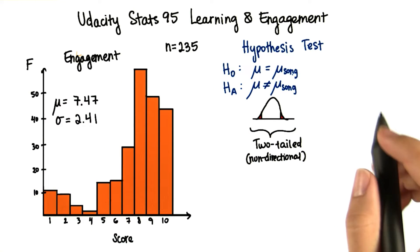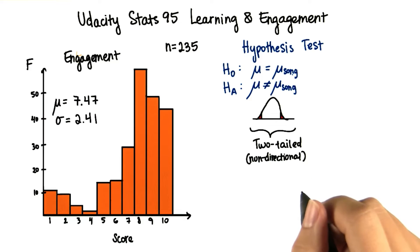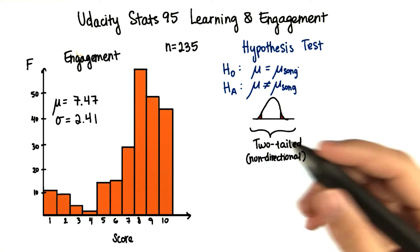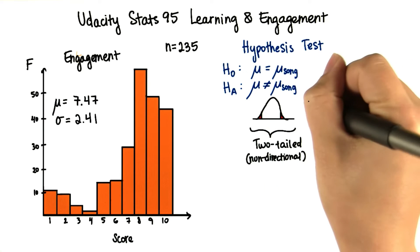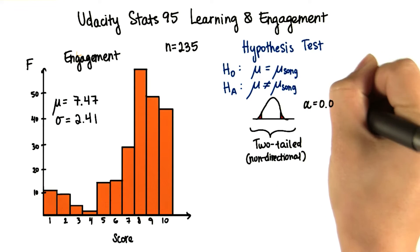Our next step is to set our criteria for making a decision, where our decision will be to either reject or fail to reject the null. We have to choose our alpha level. The alpha level we'll generally use is 0.05.